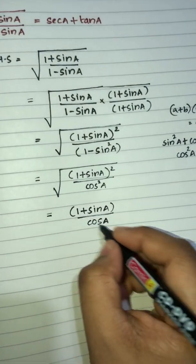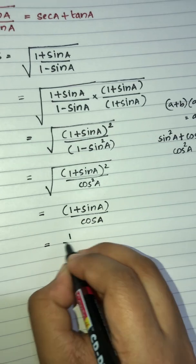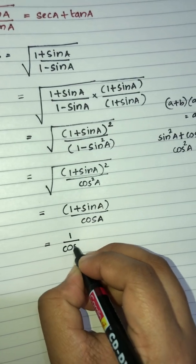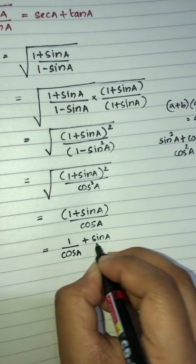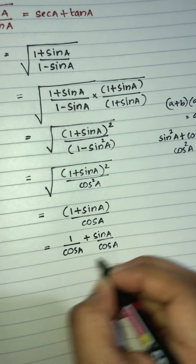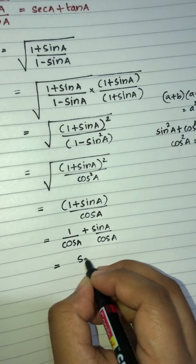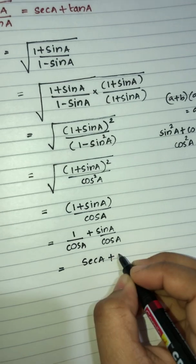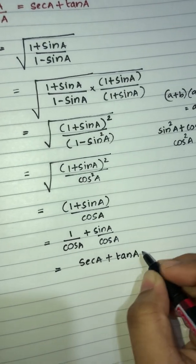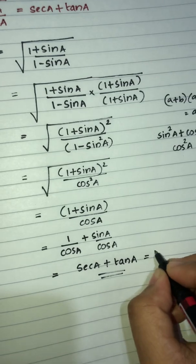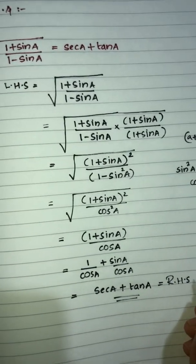Separating the fraction: 1 divided by cos A plus sin A divided by cos A. That is sec A plus tan A, which equals RHS. Hence LHS is equal to RHS. Easy question.